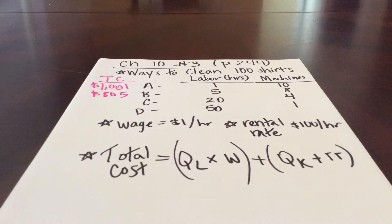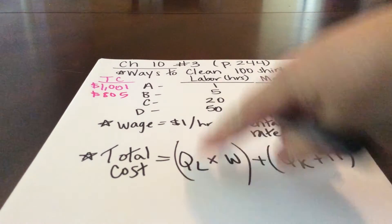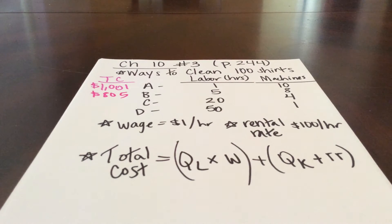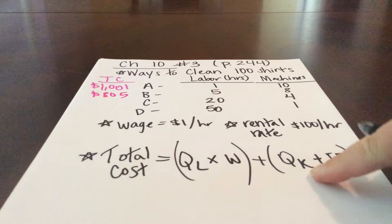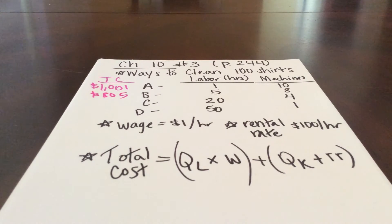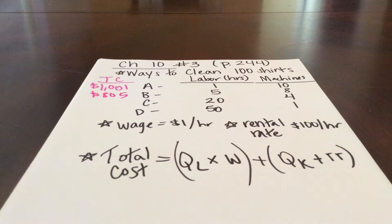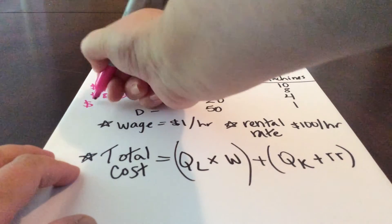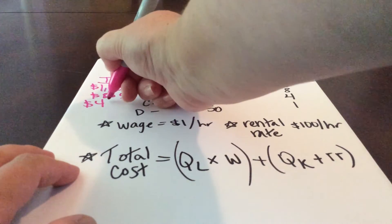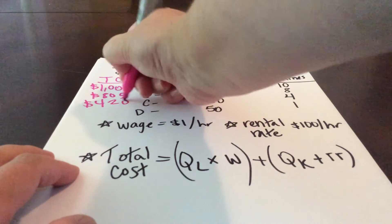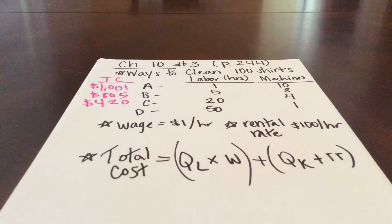Same thing for option C. Our quantity of labor is 20 times that wage rate of $1 for $20, and then the quantity of machines is 4 times that rental rate of $100 for $400. So our total cost for option C is $420.